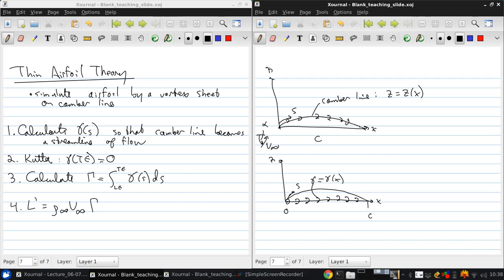So a key point here, and I'm going to write this down. We still want the camber line to be streamlined of the flow, not the cord line, even though we've moved where the vortex sheet is located. So then we calculate gamma of x to satisfy the camber line being a streamline of the flow and the Kutta condition, which is that gamma of x equals cord is zero.